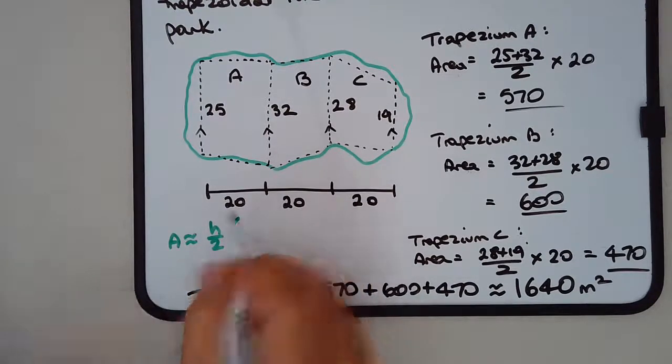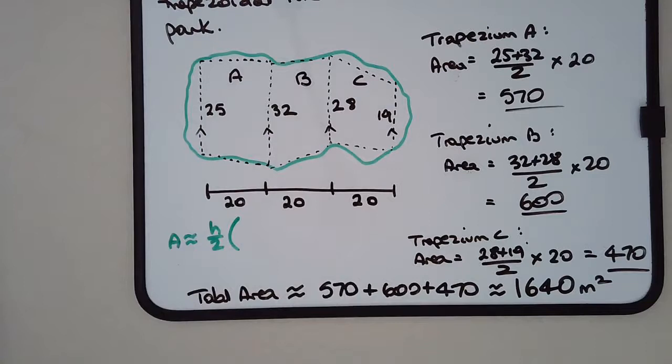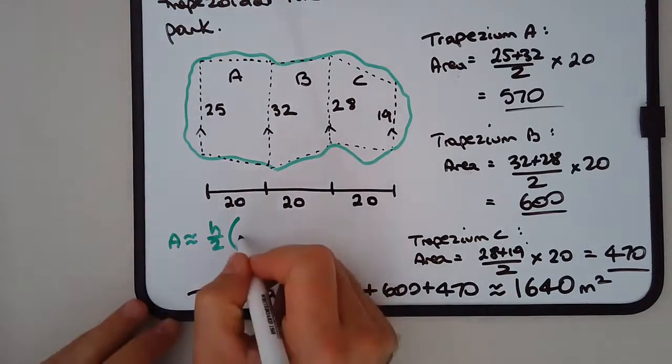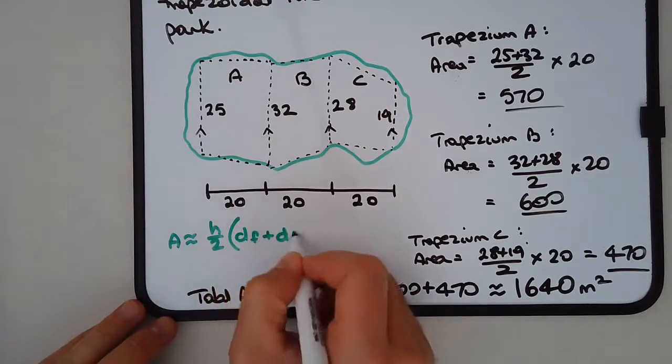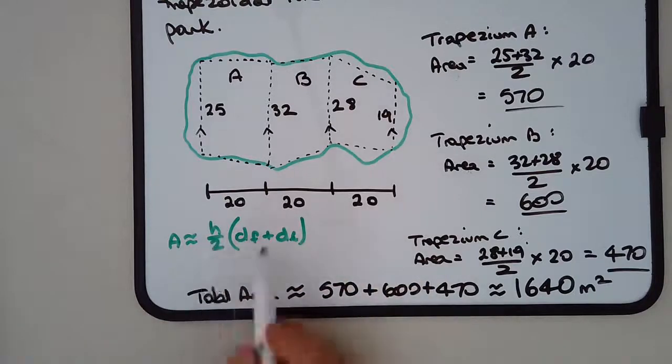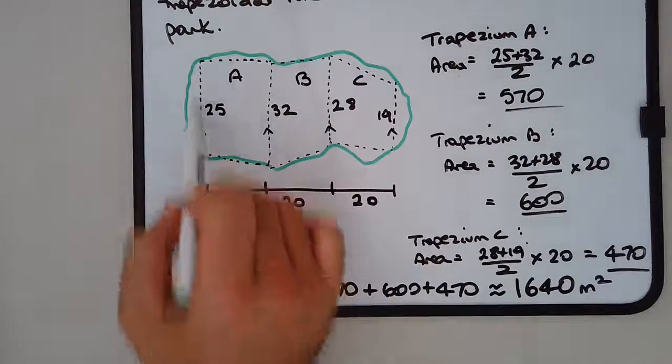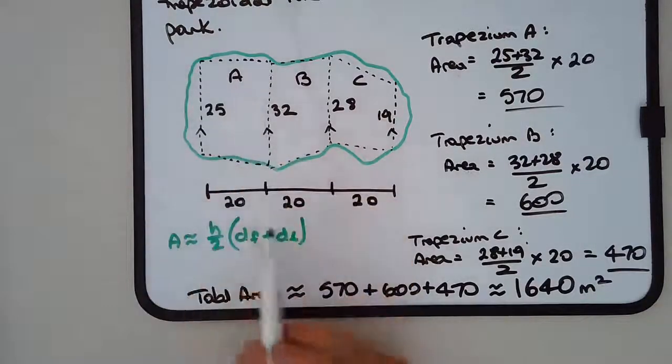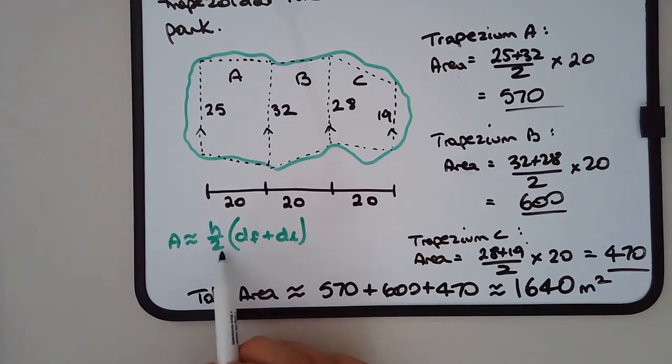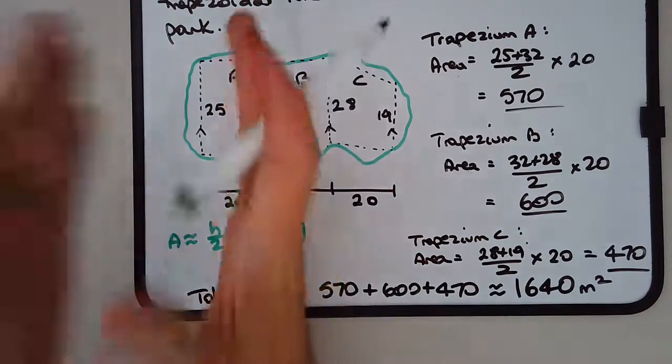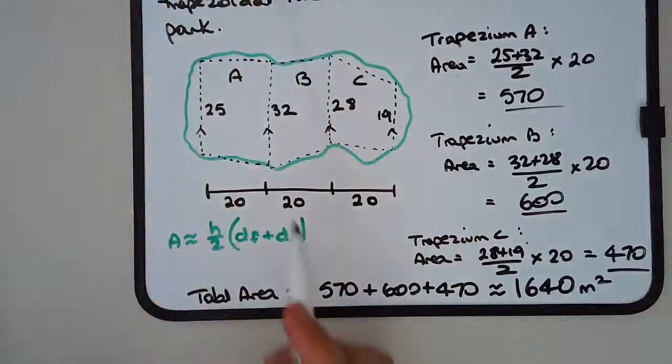I think it's df plus dl - let me check that. Yeah, df plus dl, so the first distance plus the last distance. That's how it's quoted. But how we've used the formula, we've used df and dl - these are the parallel lines. We've taken the average of those, so we've divided them by 2. I actually feel that's more intuitive to think of it as the average of the two parallel lines, because what's a trapezium? It's a distorted rectangle, and then you multiply by h.